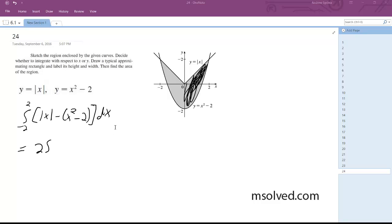Alright, so now it's actually going to be from 0 to 2, and it's going to be x minus x squared plus 2 dx.